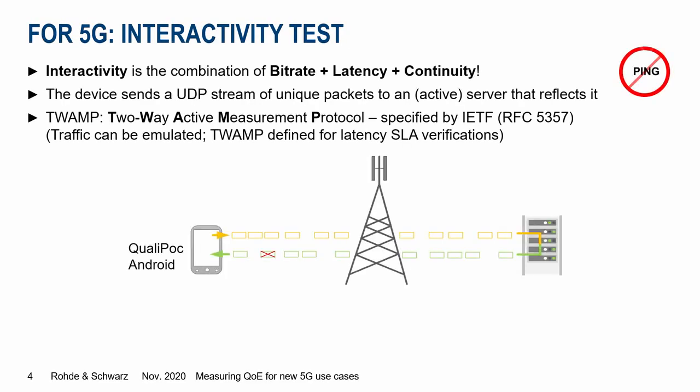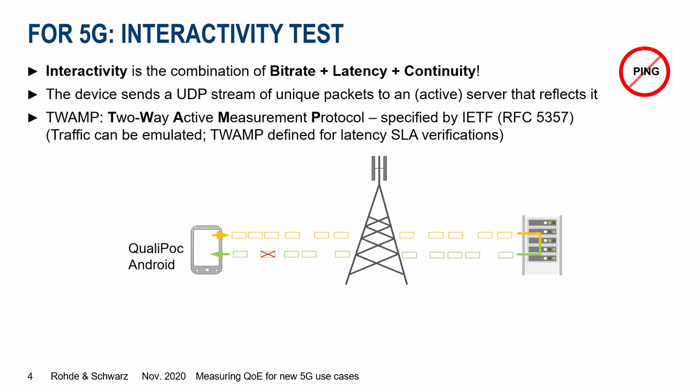So what did Rohde & Schwarz do? We have implemented, in order to test those 5G use cases, a so-called interactivity test. The main idea of this test is to have one IP test that produces one score reflecting interactivity — how good the service is for different use cases. Interactivity, from our point of view, covers bitrate, latency, and continuity. We send a UDP stream to a server and the server reflects it. We use not the ping signal — ping is not accurate enough — we use the TWAMP protocol, the two-way active measurement protocol, which is the right methodology to test interactivity.